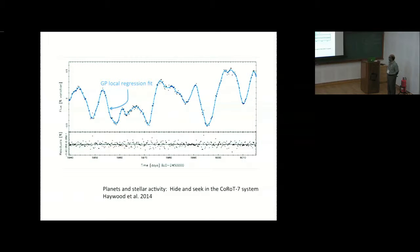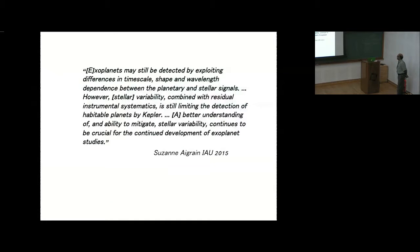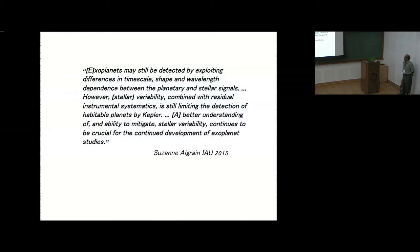The data on stellar activity and planets — it's like hide and seek. We see a trend as well as some kind of periodicity, and the challenge is how to separate them. Noise is also very high. During the IAU meeting in 2015 in Hawaii, Susan Aigrain expressed her opinion that exoplanets may still be detected by exploiting differences in time scales, shape, and wavelength dependence between the planetary and stellar signals. However, stellar variability combined with residual instrumental systematics is still limiting the detection of habitable planets by Kepler, and a better understanding of stellar variability continues to be crucial.